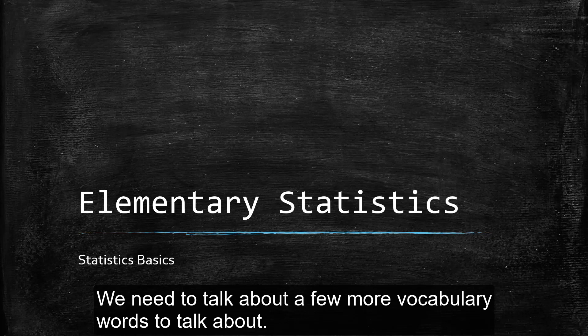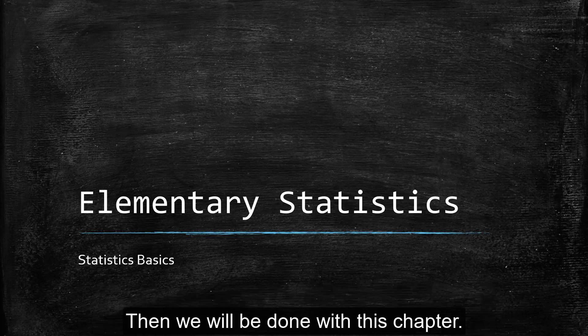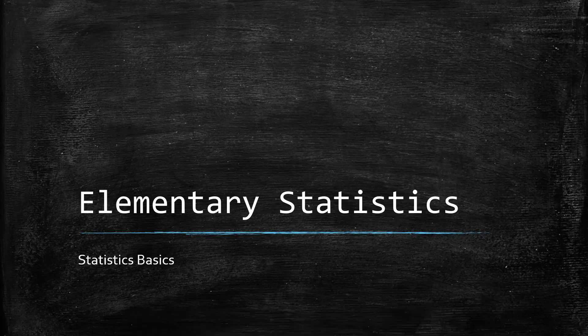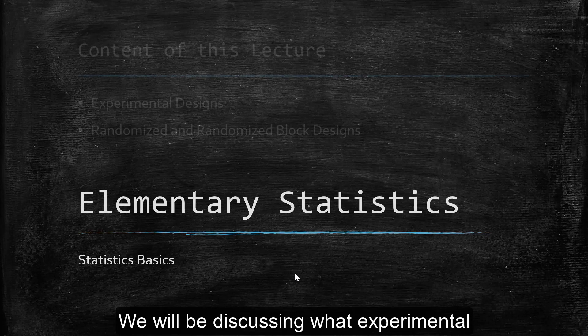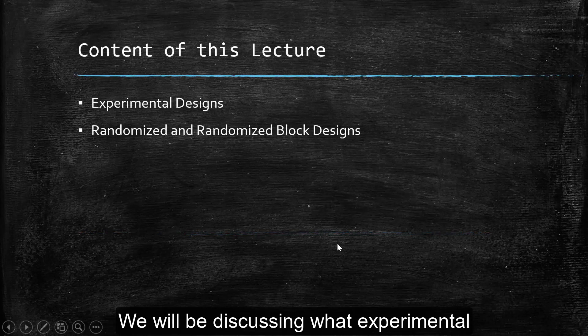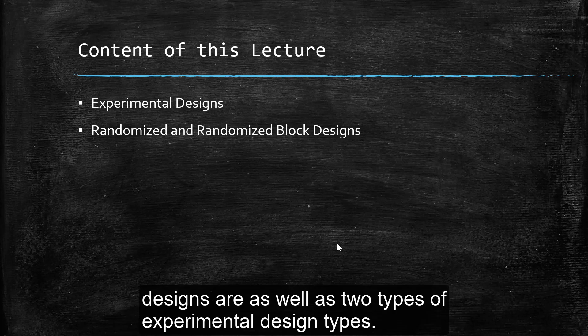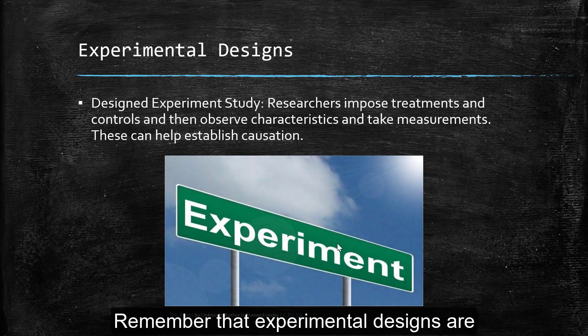Alright, for this section we have just a few more things to talk about, and then we'll be done with this chapter of introduction of statistics basics. So for this lecture, we're going to be talking about what experimental designs are and then the two types of experimental designs that we'll see, which is completely randomized and randomized block designs.